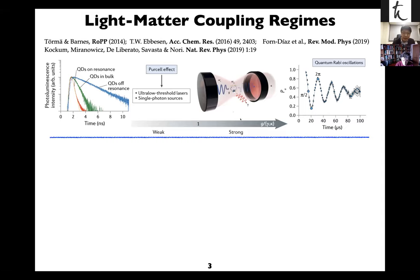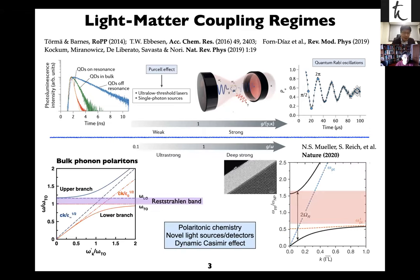We've seen many examples of strong coupling, where coupling strength exceeds losses in the system. When we talk about ultra-strong coupling, we do not compare coupling strength to system losses, but to the transition frequency of the system. Typically, when the coupling strength is about 10% or larger than the transition frequency, it's called the ultra-strong coupling regime.